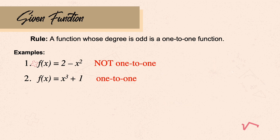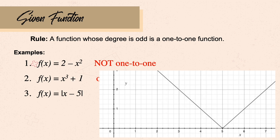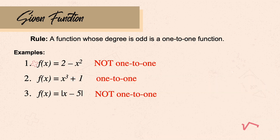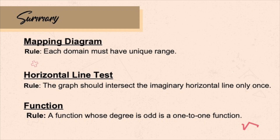The third example is f(x) = |x - 5|. Recall that the graph of an absolute value function looks like the letter V. Applying the horizontal line test, the line will intersect the graph twice, so any absolute value function is not a one-to-one function. The last example, f(x) = 1/(x - 2), is a rational function. The highest degree of x - 2 is 1, which is odd, so this is a one-to-one function.